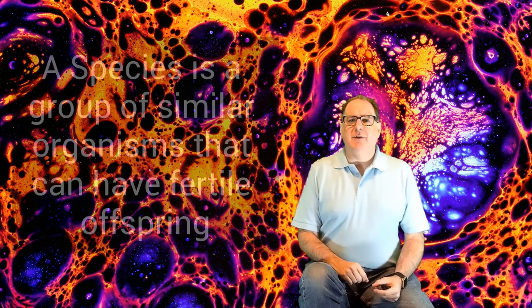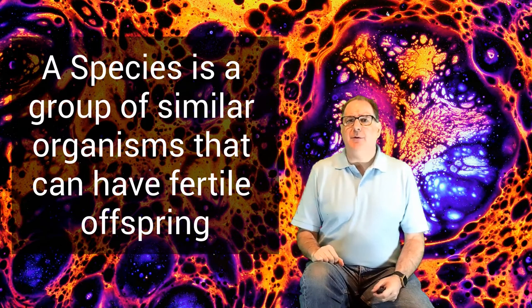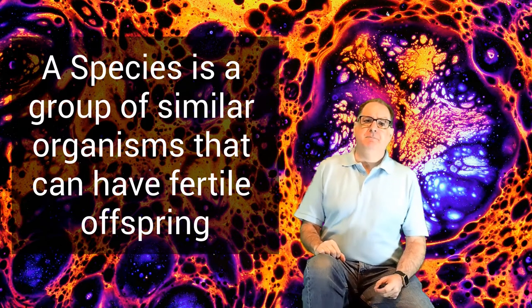So first off, a species is a group of closely related organisms that are similar and can have fertile offspring. Okay, similar, that makes sense. Fertile offspring? What's that? Well, it means that the offspring can have offspring of their own.